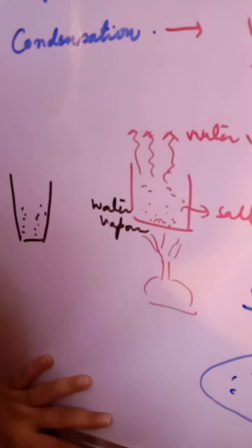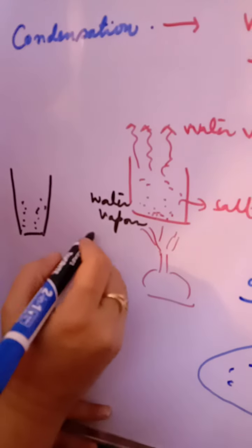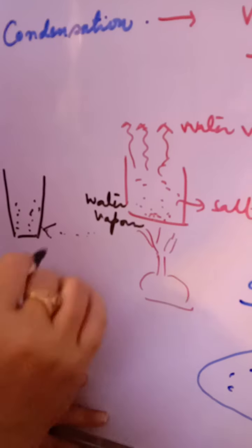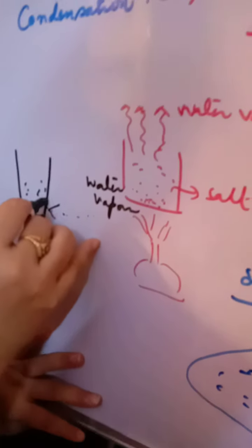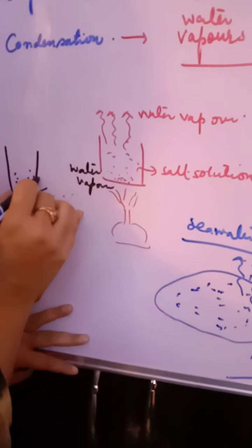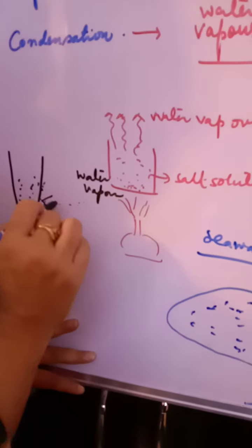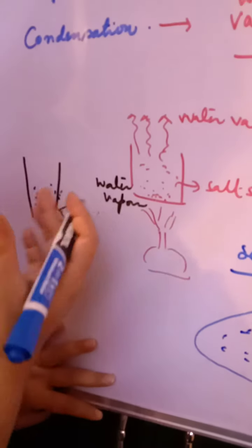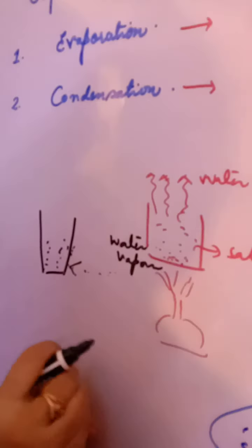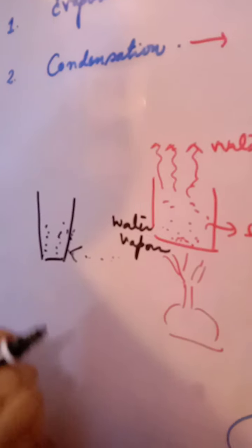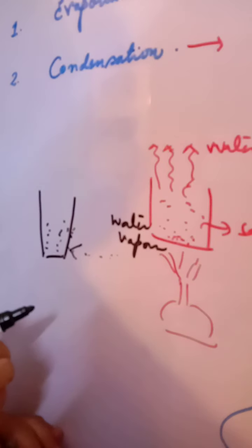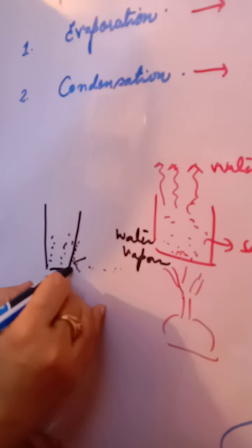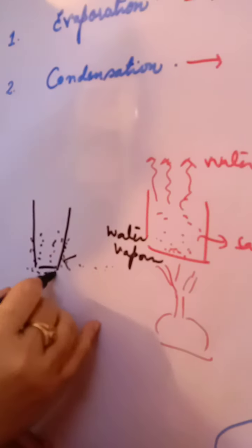In rainy season there is a lot of moisture or water vapor. When it strikes the surface of a cold glass, it loses its energy and it changes into liquid water again. So this process is known as condensation.